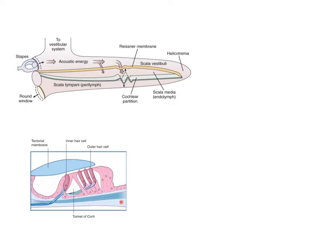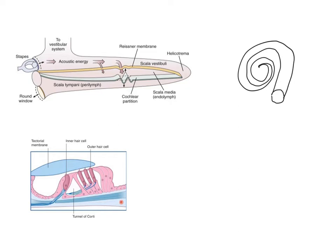First of all, let's take a look at the cochlea in a little bit of detail. What you need to remember is that physiologists represent the cochlea in a slightly unusual way. What they do is take the snail shell of the cochlea and unravel it to produce something that looks like the image at the top left. The central portion of this spiral is actually the bit at the end here, and the open end of the snail shell, where the oval and round windows are, is this end here. This is the standard way physiologists represent the cochlea, and it helps us understand a number of aspects of its function.